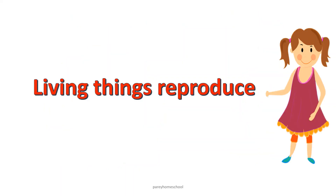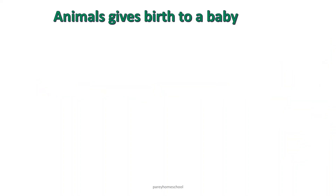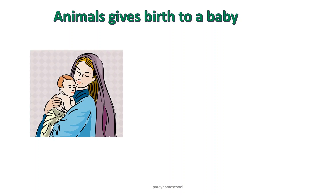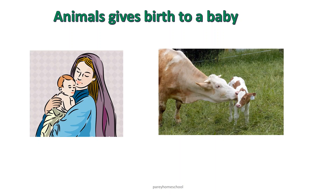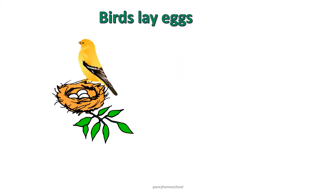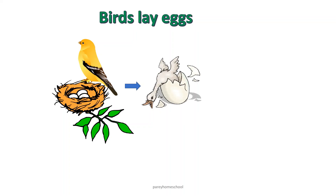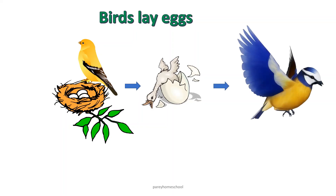Living things reproduce. Animals give birth to a baby. For example, a woman gives birth to a baby, and a cow gives birth to a calf. Birds lay eggs, from which young ones come out. Slowly, that young one grows into an adult bird. In this way, birds can also grow.